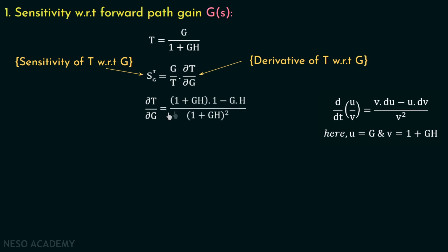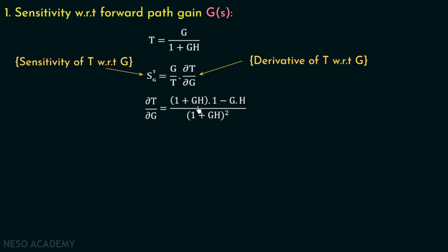So del T over del G equals: we treat the denominator as constant multiplied with the differentiation of the numerator function with respect to G, which equals 1, minus the numerator treated as constant multiplied with the differentiation of the denominator. The differentiation of 1 plus GH with respect to G equals H. So we have the numerator as 1 plus GH multiplied with 1, minus GH multiplied with H, all divided by 1 plus GH whole squared.